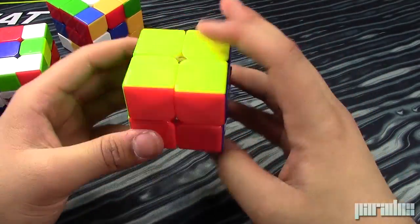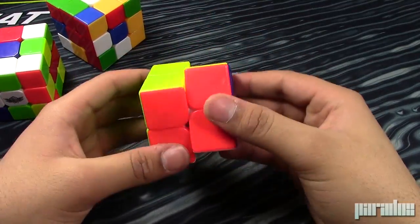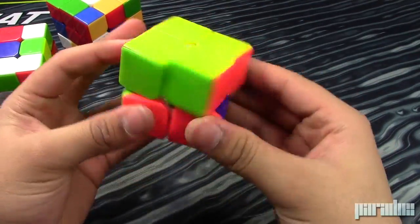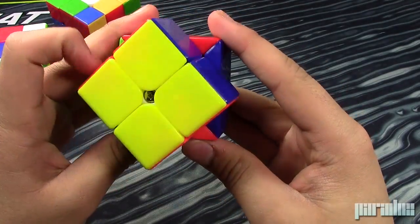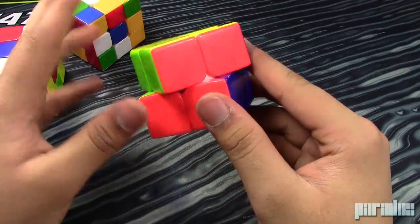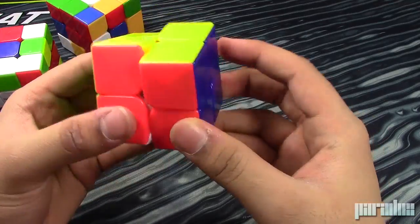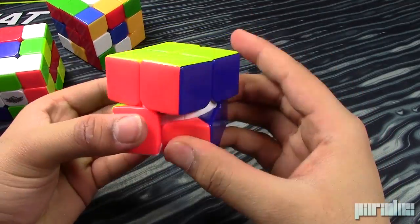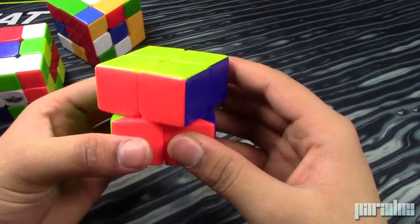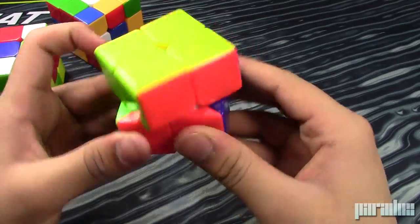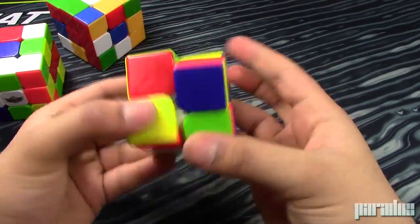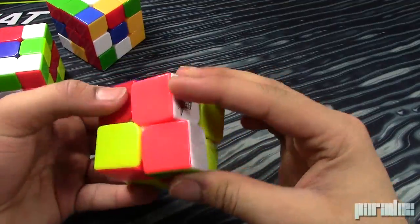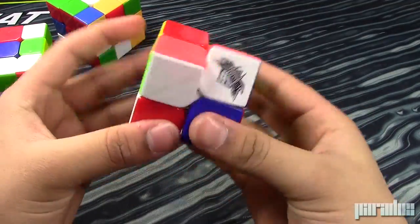So first turns, pretty dry. Yeah, it feels pretty slow too. Can't really corner cut 45. It feels like it's not lubed at all. Yeah, I don't think this is lubed at all. You can barely reverse corner cut. Again, it can almost cut 45, not really actually.